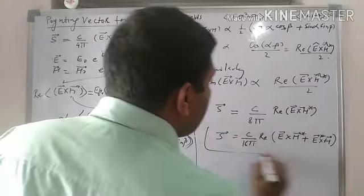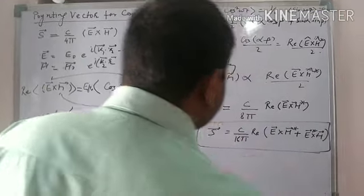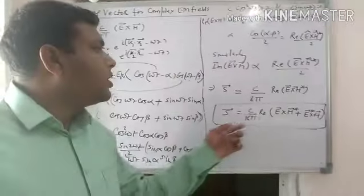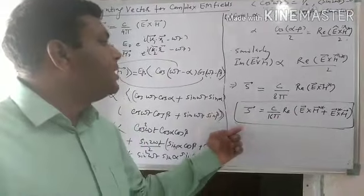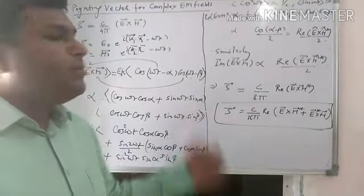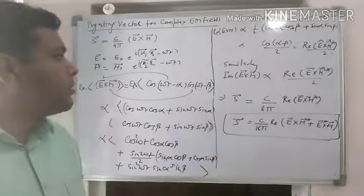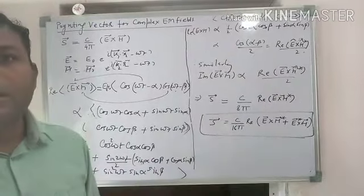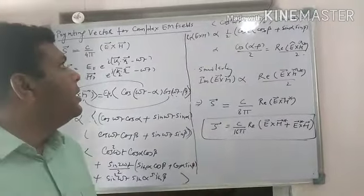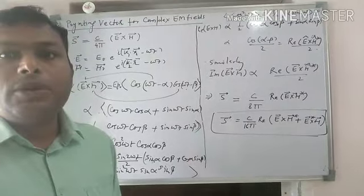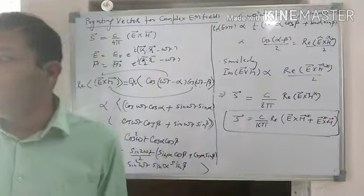So that's how the Poynting vector for the complex electric and magnetic field gets modified. In the forthcoming lectures, this particular Poynting vector would be very useful in order to do the further analysis on the electromagnetic fields. Thanks so much.